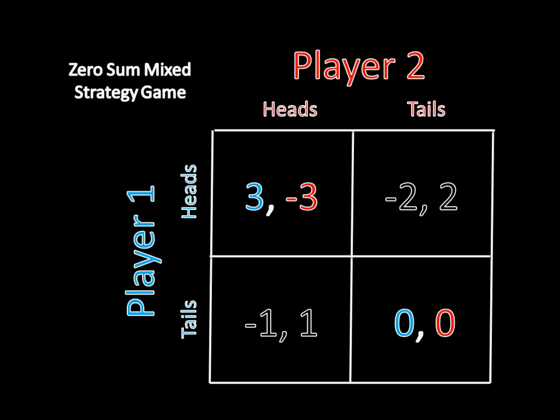But player 2 really wants to avoid playing heads, so she might want to play tails more often. But if player 1 knows 2 is going to be playing tails more often, he might want to play tails more frequently than heads. In turn, to avoid that situation, player 2 might want to begin playing heads more frequently. This is just creating a giant mess, as it isn't exactly clear what the mixed strategy equilibrium is going to be.